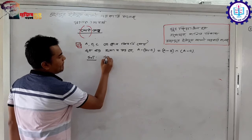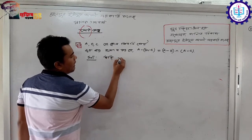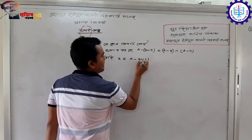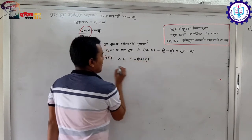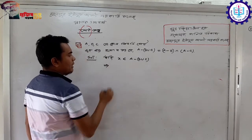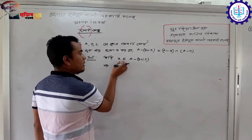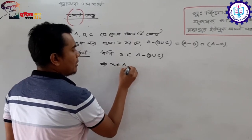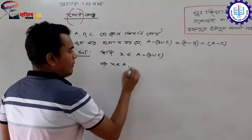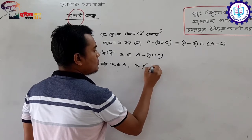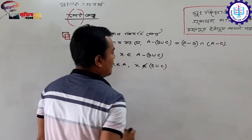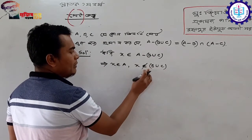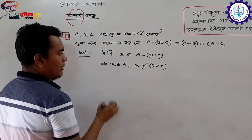Suppose x belongs to the left-hand side. For this part, x belongs to A̅ minus (B∪C). Because of the minus sign, we note that not-belongs-to applies here.